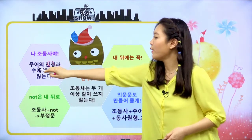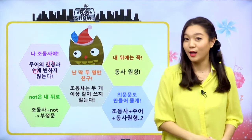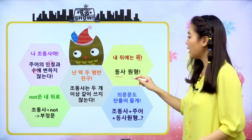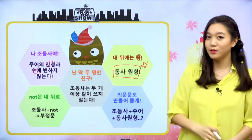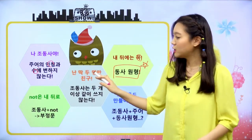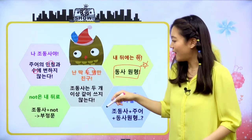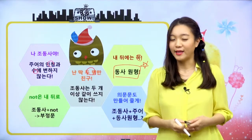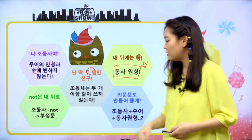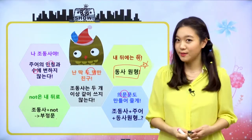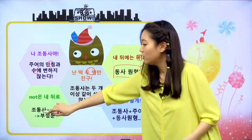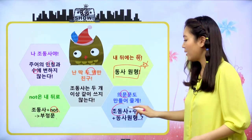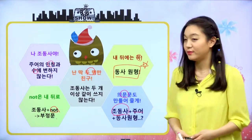조동사는 주어의 인칭과 수에 따라 변하지 않는다고 했었죠. 그리고 조동사 뒤에는 꼭 동사 원형이 온다 — 이거 굉장히 중요하다고 선생님이 계속 강조를 했었어요. 그리고 까탈스러운 조동사는 친구를 딱 두 개까지만, 두 개 이상 같이 쓰지 않는다고 이야기했었고요. 조동사가 부정문을 만들 때는 조동사 다음에 not을 붙이면 되고, 의문문은 조동사가 주어 앞으로 나와서 만들어준다고 했었죠.